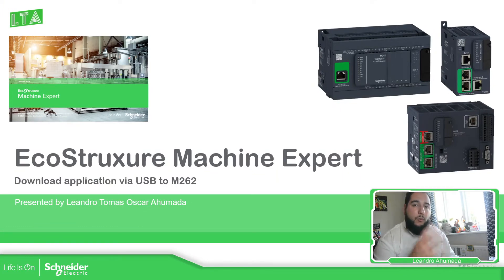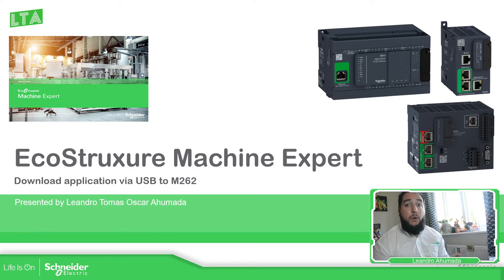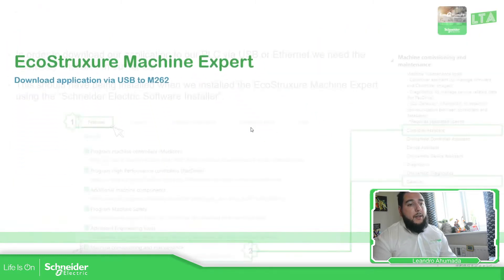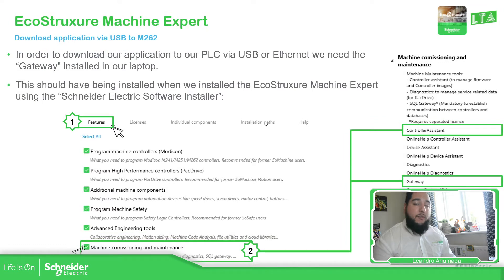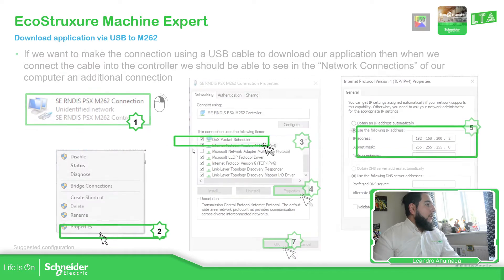The first thing that we need in order to download an application to the M262 is to have the Machine Expert. To have the Machine Expert, we must download from our website the Schneider Electric Software Installer. Once we select the Software Installer, it is important that we must select on the features this one — Machine Commissioning and Maintenance — because this one has the tools that allow us to have the drivers and also the gateway that allows us to connect with the device. So that's the important thing.